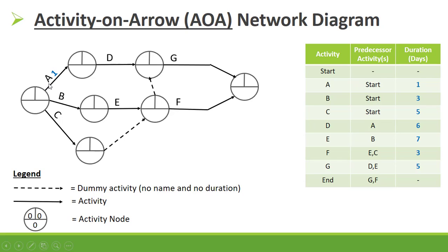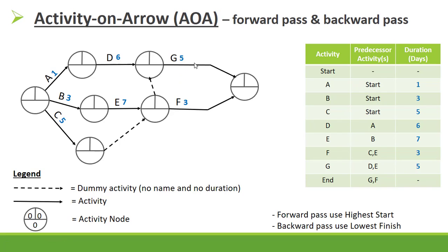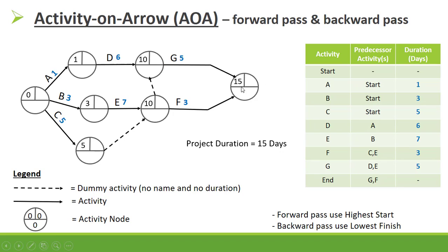The duration of A is one day, B is three days, C is five days, D is six days, E is seven days, F is three days, and G is five days. For the forward pass, we start with zero. Zero plus one is one, zero plus three is three, zero plus five is five. Then three plus seven is ten, or five — we use the highest, which is ten. One plus six is seven, or ten — we use ten. Ten plus five is fifteen, and ten plus three is thirteen — we use the highest, which is fifteen. Our project duration is fifteen days.